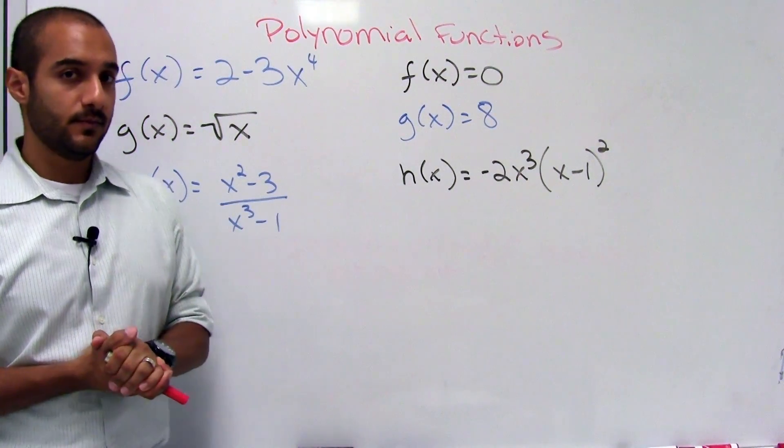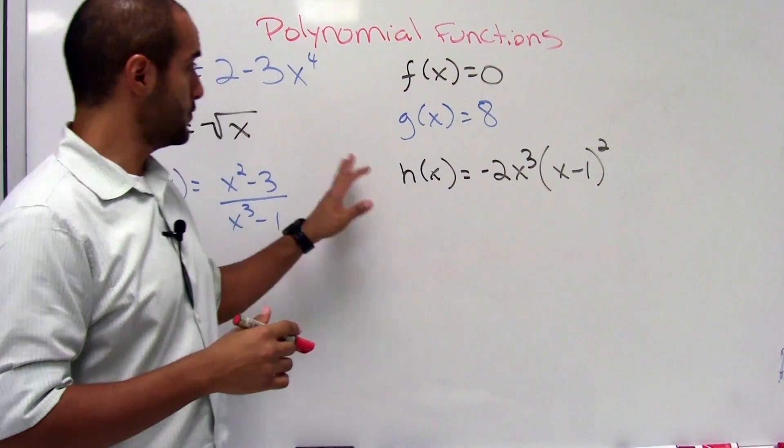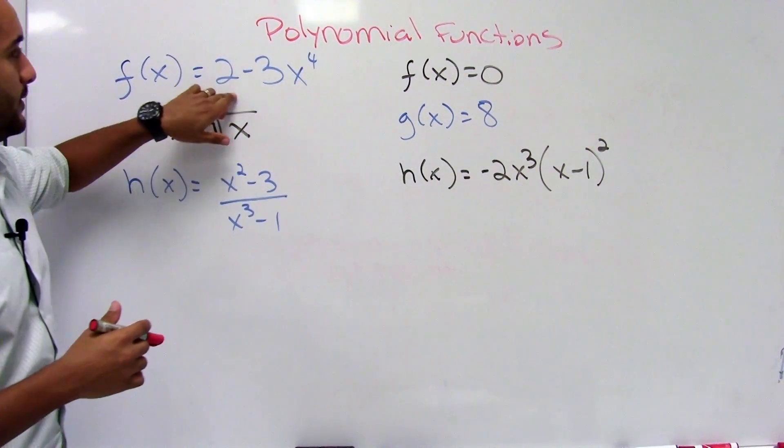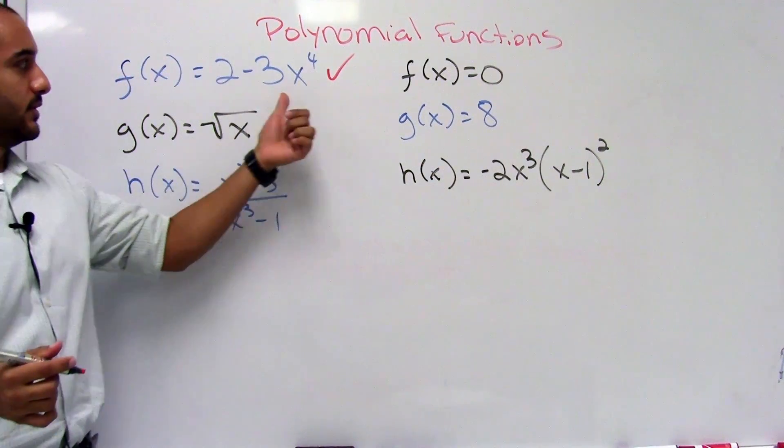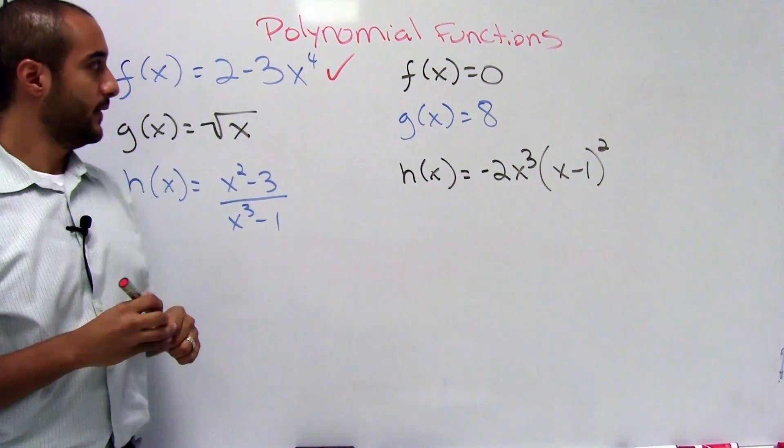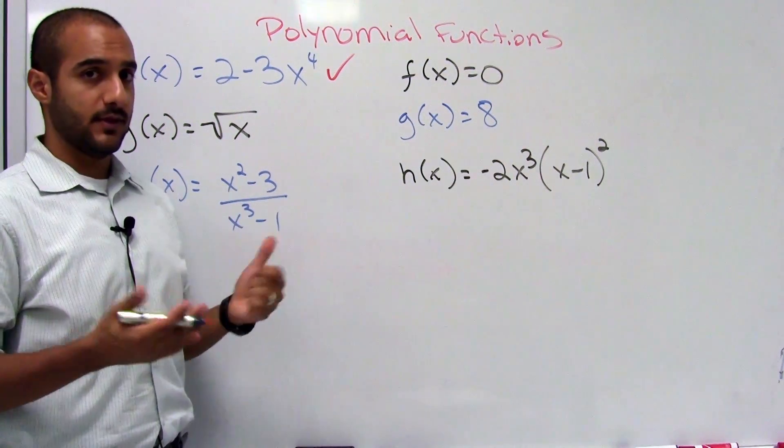Alright, so let's see if you can do this before I show you. Look at the definition again and see if you can pick out which of these are polynomials and which aren't. So go ahead and pause the video and I'll show you the answers in 3, 2, 1. Alright, so let's take a look at each one. This one is a polynomial function. Its degree is 4.